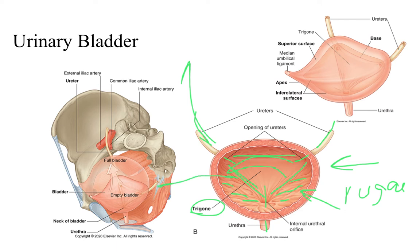An empty bladder has rugae, and as the bladder fills up, those rugae flatten out and you have a smooth surface. In cat dissections, if a cat has a really small urinary bladder with a lot of rugae, it died with its bladder empty. If it has a big, flappy urinary bladder, it died with its bladder full — definitely a big difference between the anatomy of an empty versus full urinary bladder.